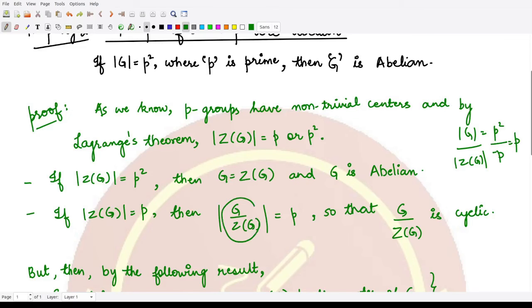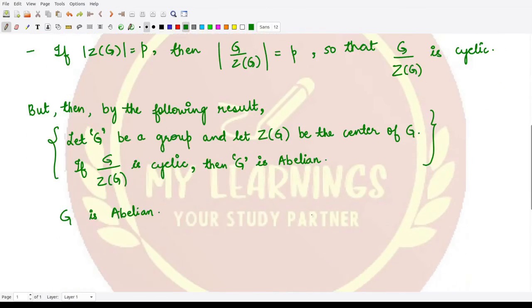...it is obviously a cyclic group. So this group is cyclic. If this is cyclic, then according to the following result, we have G as abelian.